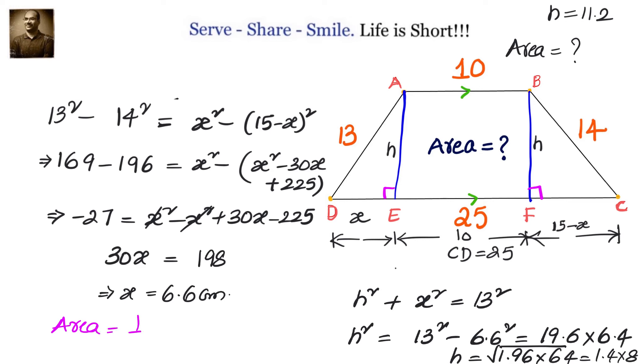Once you got 11.2, now we are ready to complete this problem. We can use the formula: area of trapezium = ½ × (sum of parallel sides) × height, which is ½ × (10 + 25) × 11.2 = 5.6 × 35 = 196 centimeter square.